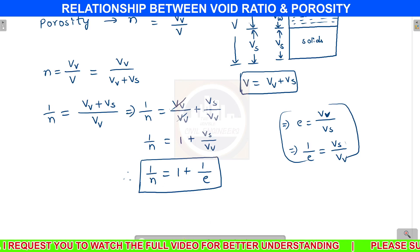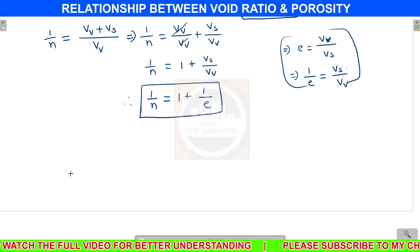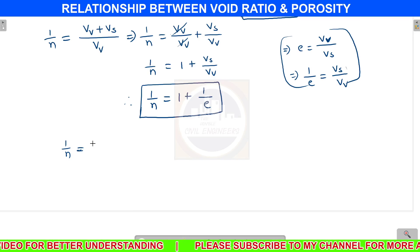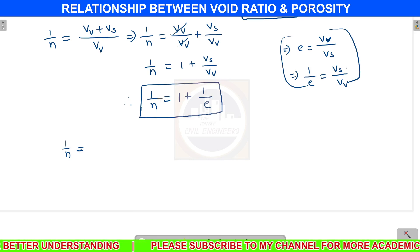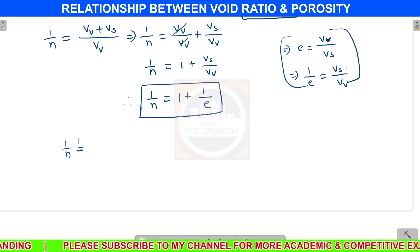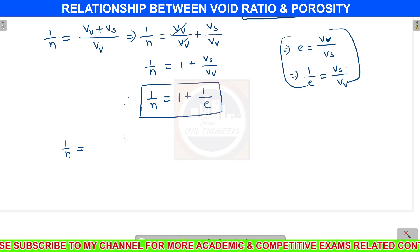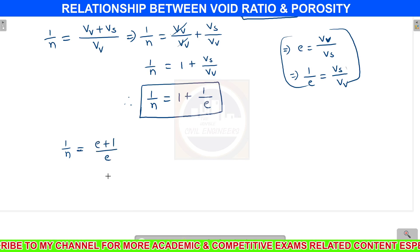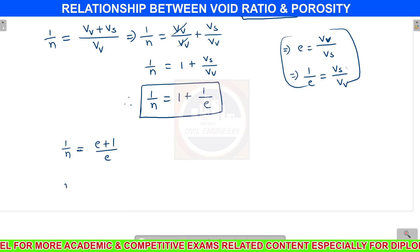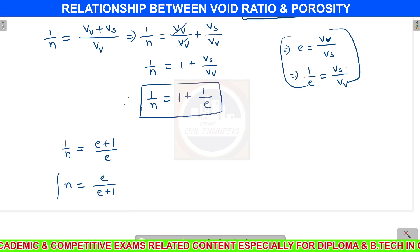From this we can find n and e. If we need porosity in terms of void ratio: starting from 1/n equals 1 plus 1/e, taking LCM gives 1/n equals (e plus 1)/e. Inverting this equation gives n equals e divided by (e plus 1).